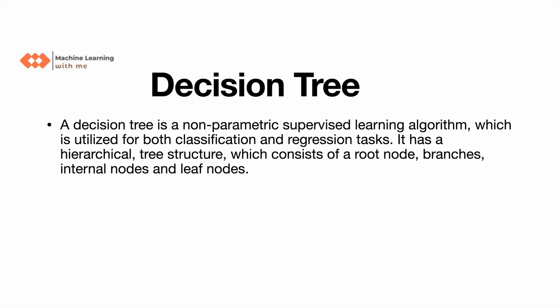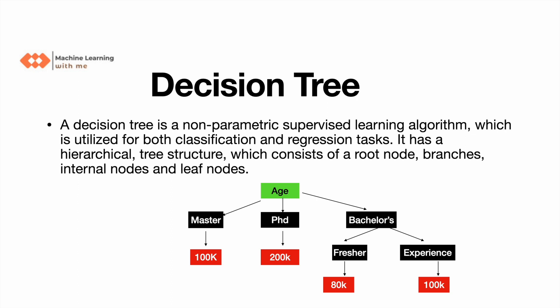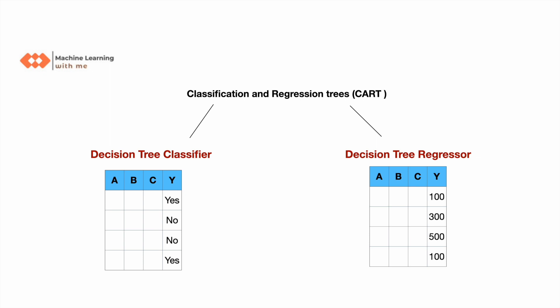A decision tree is a non-parametric supervised learning algorithm utilized for both classification and regression tasks. It has a hierarchical tree structure consisting of a root node, branches, internal nodes, and leaf nodes. For example, age is the root node, and Masters, PhD, Bachelors are the branches. The target or decision nodes are known as leaf nodes.